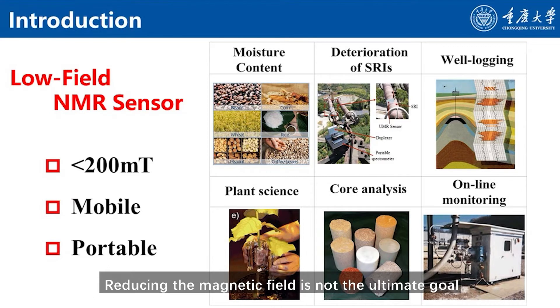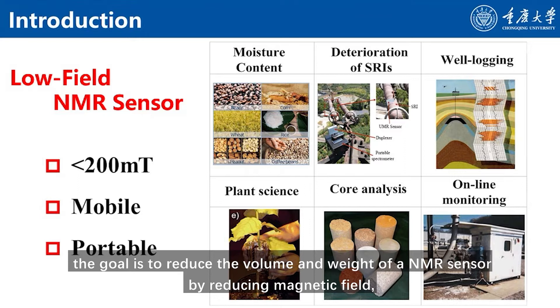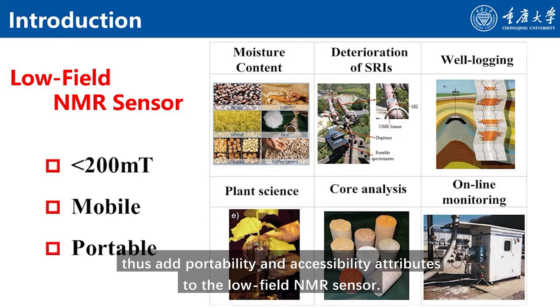Reducing the magnetic field is not the ultimate goal. The goal is to reduce the volume and weight of an NMR sensor by reducing magnetic field, thus adding portability and accessibility attributes to the low-field NMR sensor.